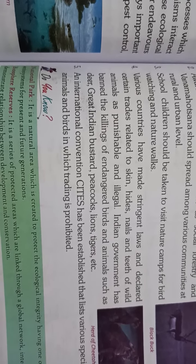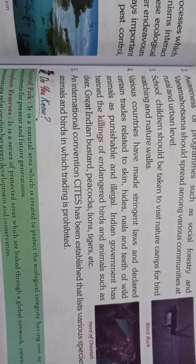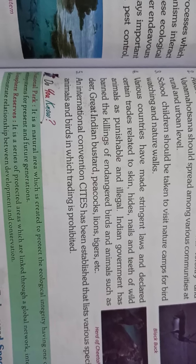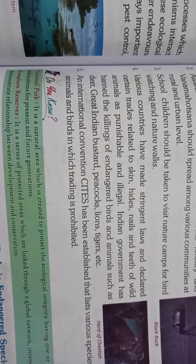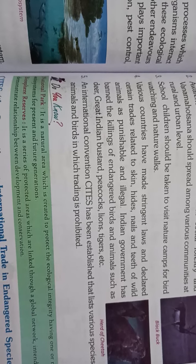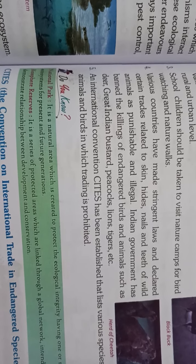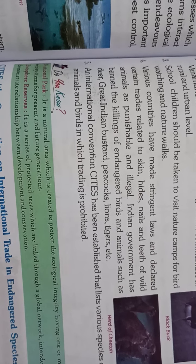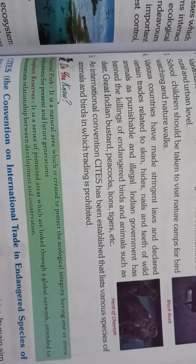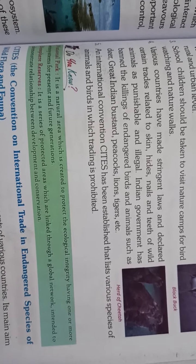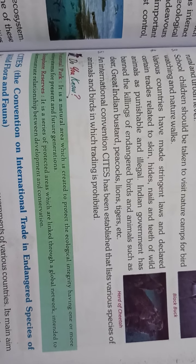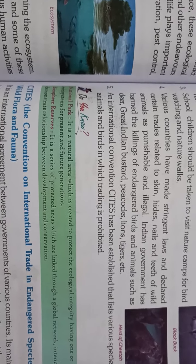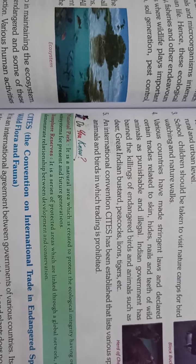The fifth point: an international convention, CITES — the Convention on International Trade in Endangered Species — has been established that lists various species of animals and birds in which trading is prohibited. So these are the five points for wildlife conservation.